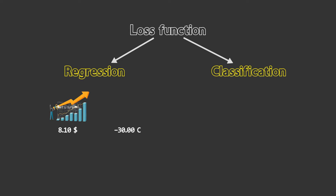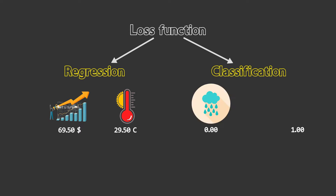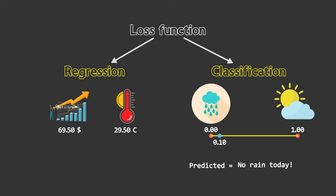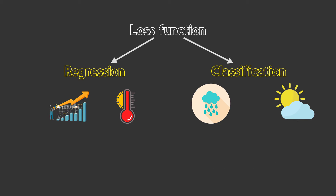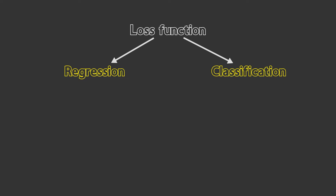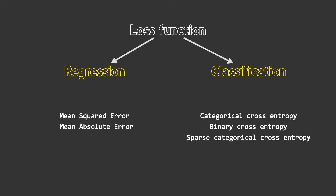Regression is about predicting stock prices or temperature — it can be any real value. In classification we have to predict between classes, like rain or no rain. If you attach a sigmoid or softmax activation layer, the output can be between 0 and 1, and the class with the higher probability is the predicted class. Because of this, there are different loss functions for regression and classification. Commonly used regression loss functions are mean squared error and mean absolute error, and for classification there are various types of cross-entropy loss functions.